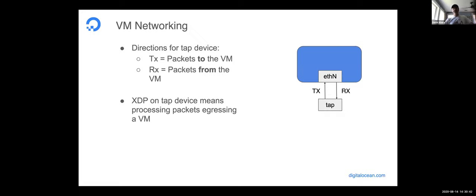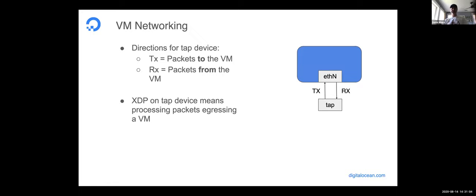Before I get into the details, I want to remind everyone of the directions for a TAP device. When a TAP device is transmitting a packet — the TX path — that's a packet going to the virtual machine, from the host being transmitted to the VM. The RX path for a TAP device is a packet coming from the virtual machine, coming into the host, so the TAP device is receiving it. That gets important when you start thinking about what you're attaching and where.